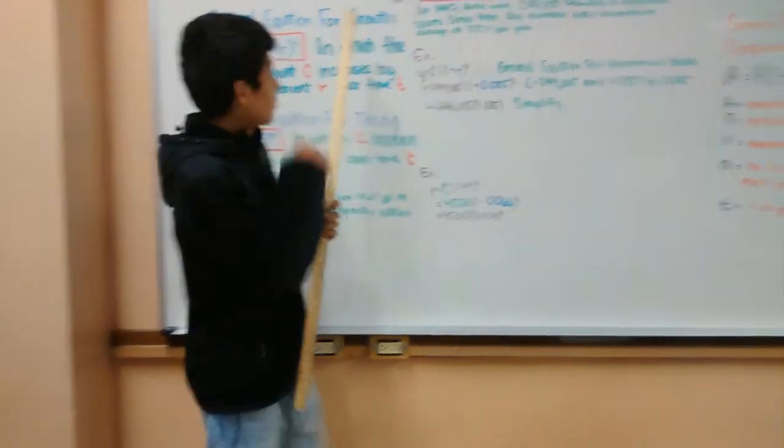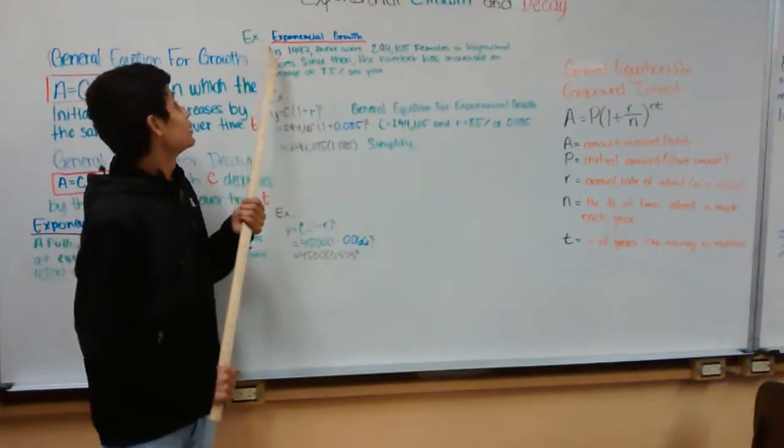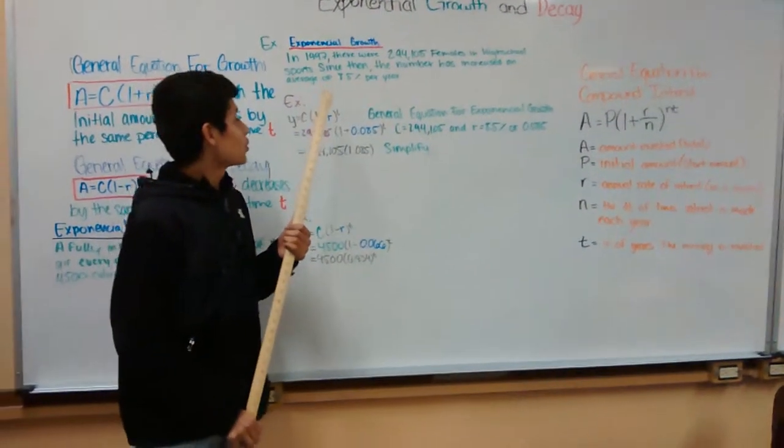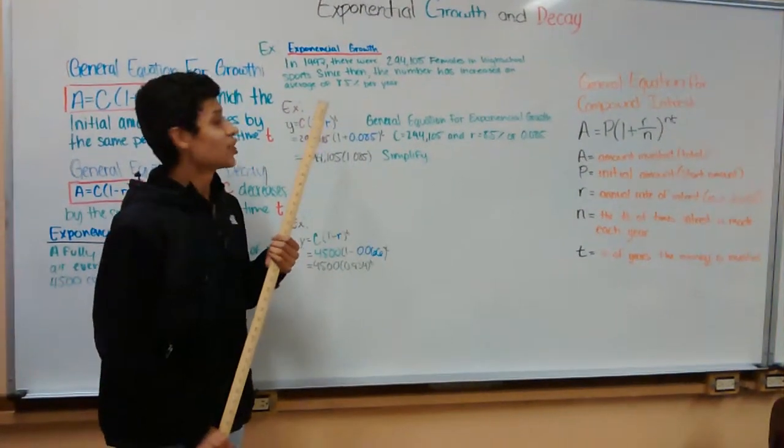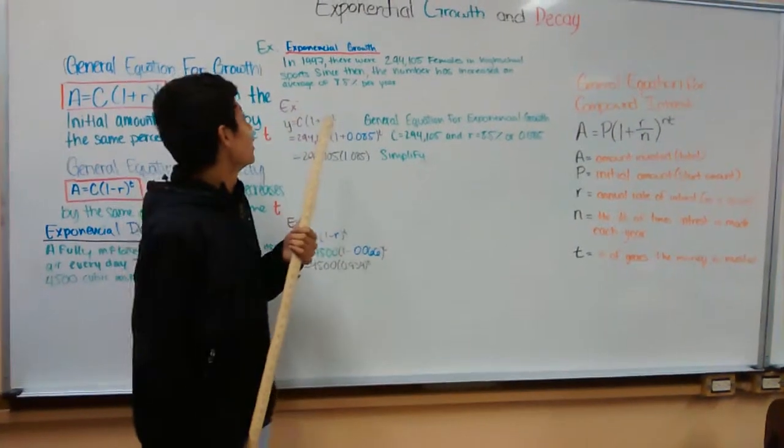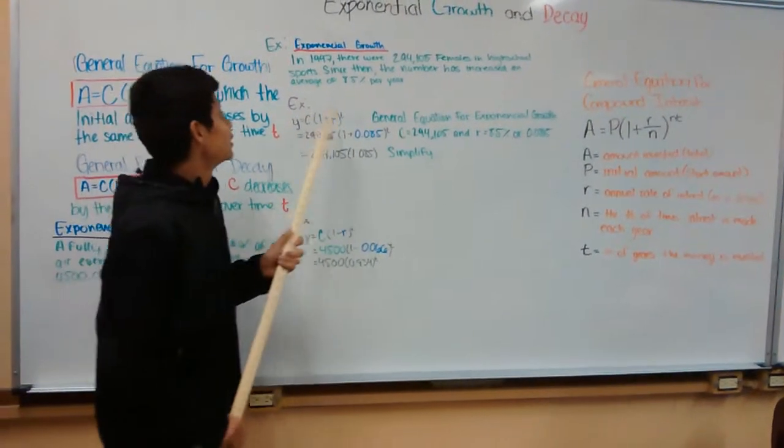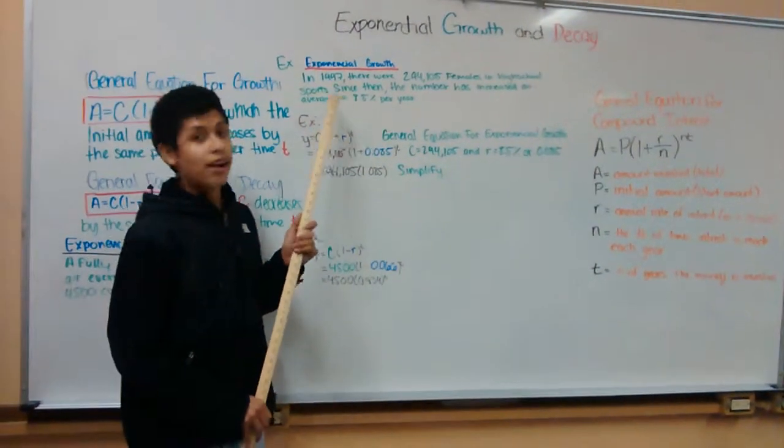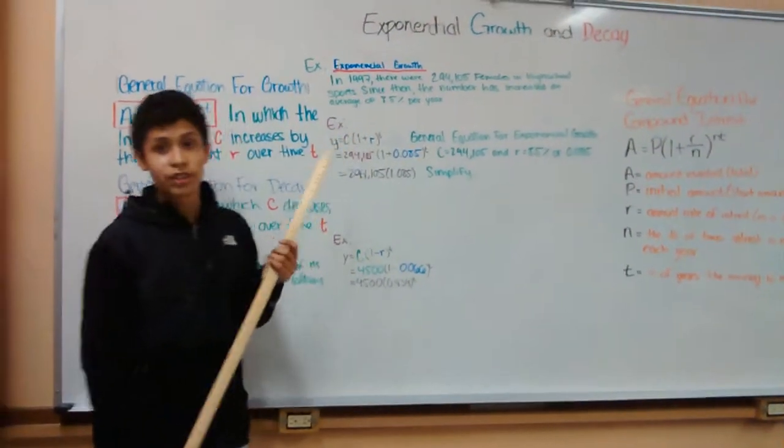For example, exponential growth. In 1997, there were 294,105 females in high school sports. Since then, the number has increased on an average of 8.5 percent per year.